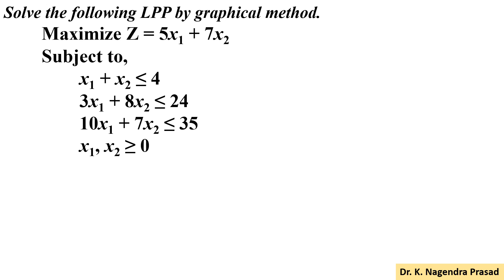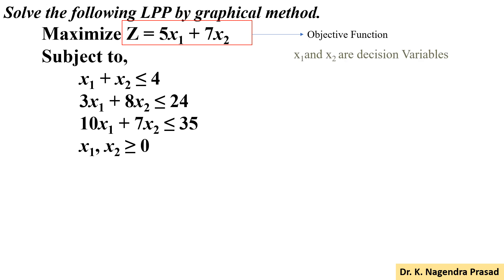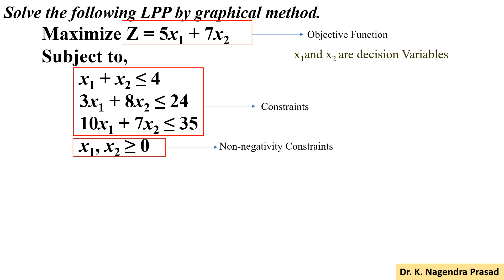Here Z equal to 5x1 plus 7x2 is the objective function, and x1 and x2 are the decision variables. The constraints are x1 plus x2 less than or equal to 4, 3x1 plus 8x2 less than or equal to 24, and 10x1 plus 7x2 less than or equal to 35. And x1, x2 greater than or equal to 0 is the non-negativity constraint.